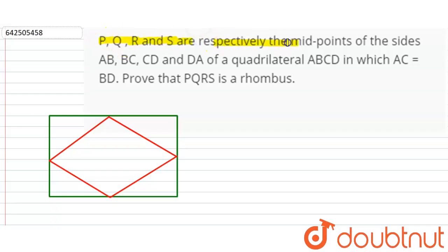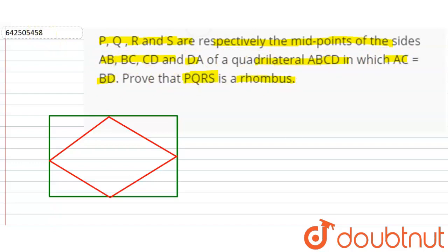Hello friends. The question is: P, Q, R and S are respectively the midpoints of the sides AB, BC, CD and DA of quadrilateral ABCD, in which AC equals BD. We have to prove that PQRS is a rhombus.